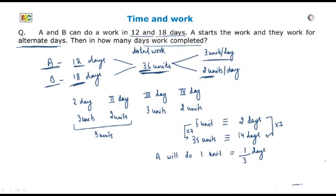It means the total work will be completed in 14 plus 1 by 3 days. So total days will be equal to 14 and 1 by 3 days, which is our answer.